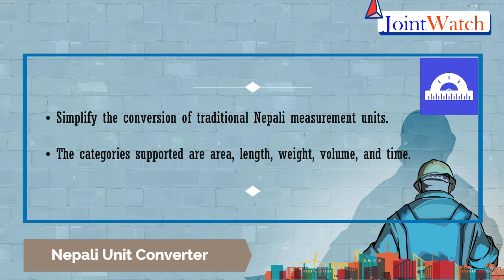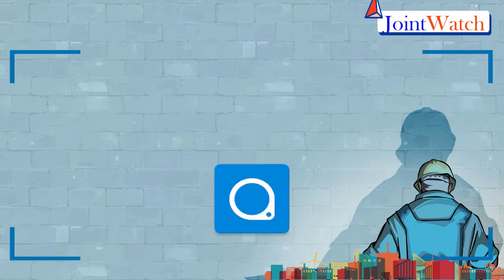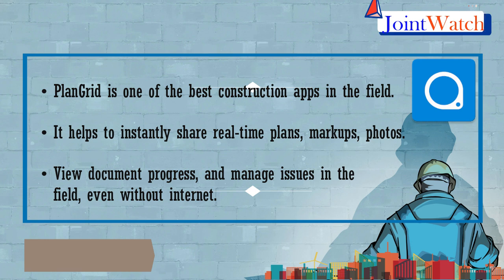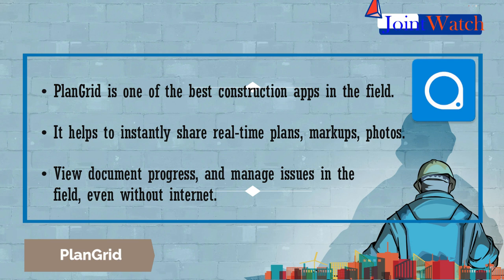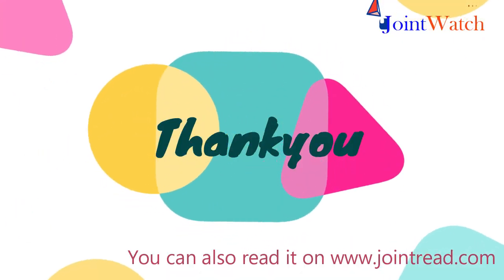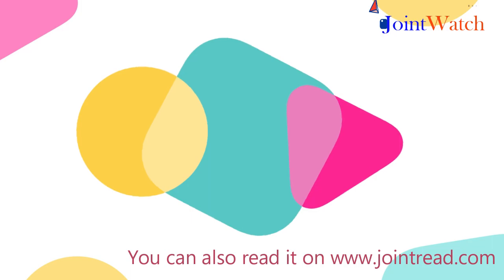The last but not the least is PlanGrid. PlanGrid is one of the best construction apps in this field. It helps you instantly share real-time plans, markups, photos, punch lists, and daily reports with the entire project team, no matter where you are. You can easily and quickly track revisions, view document progress, and manage issues in the field, even without internet. Features include automatic hyperlinking of all detail call-outs, automatic backups and archives, syncing of all construction progress photos and markups instantly across all platforms. The supported categories are area, length, weight, volume, and time. Thank you.